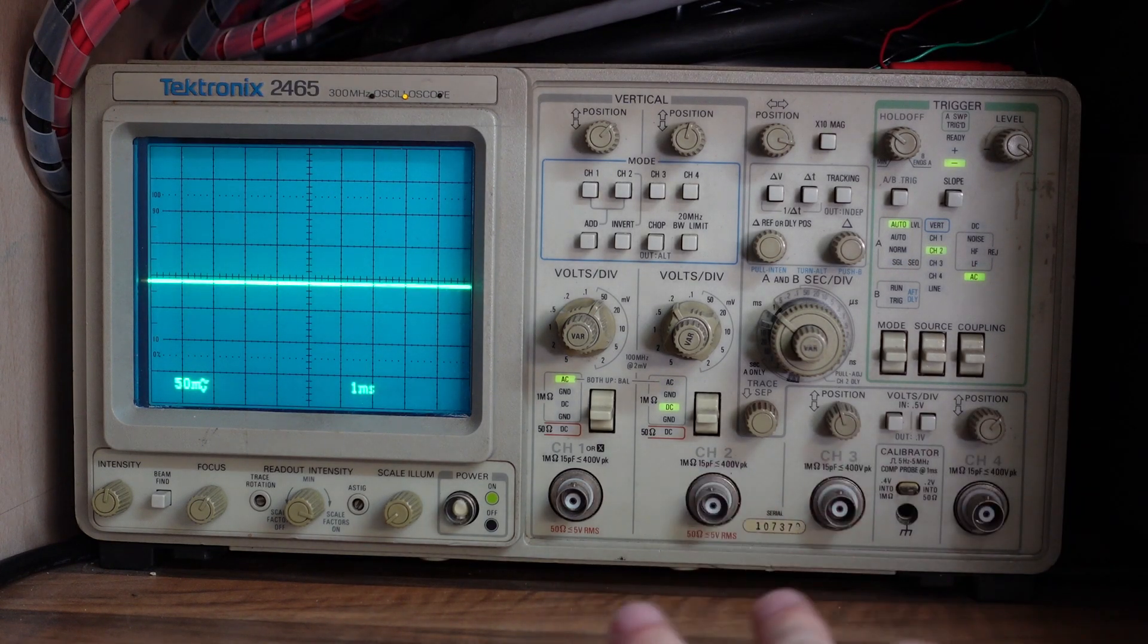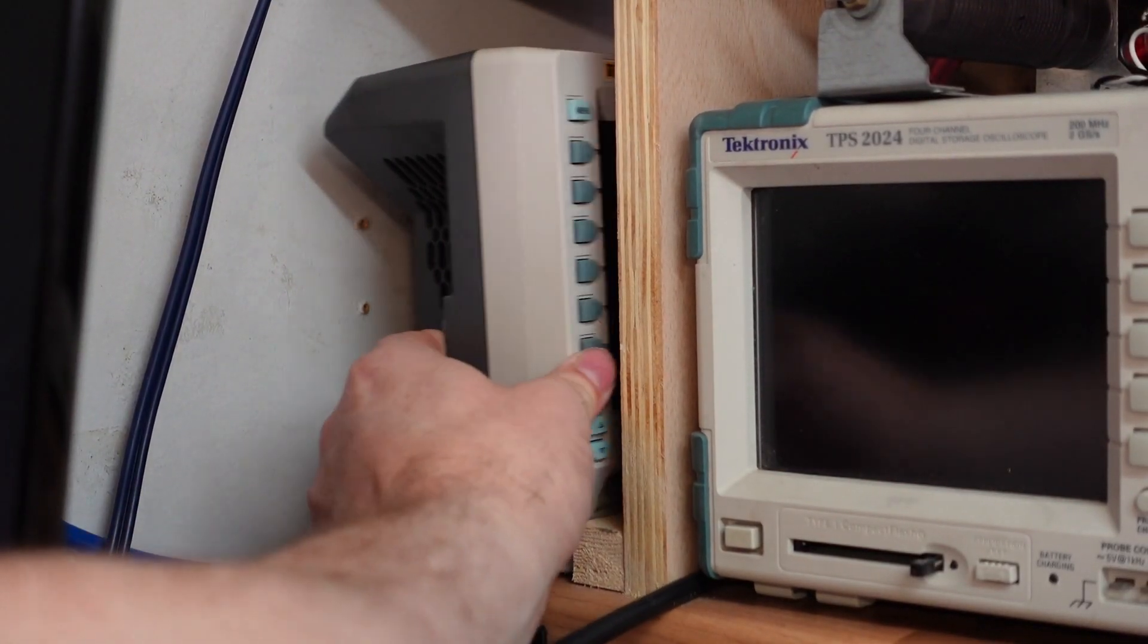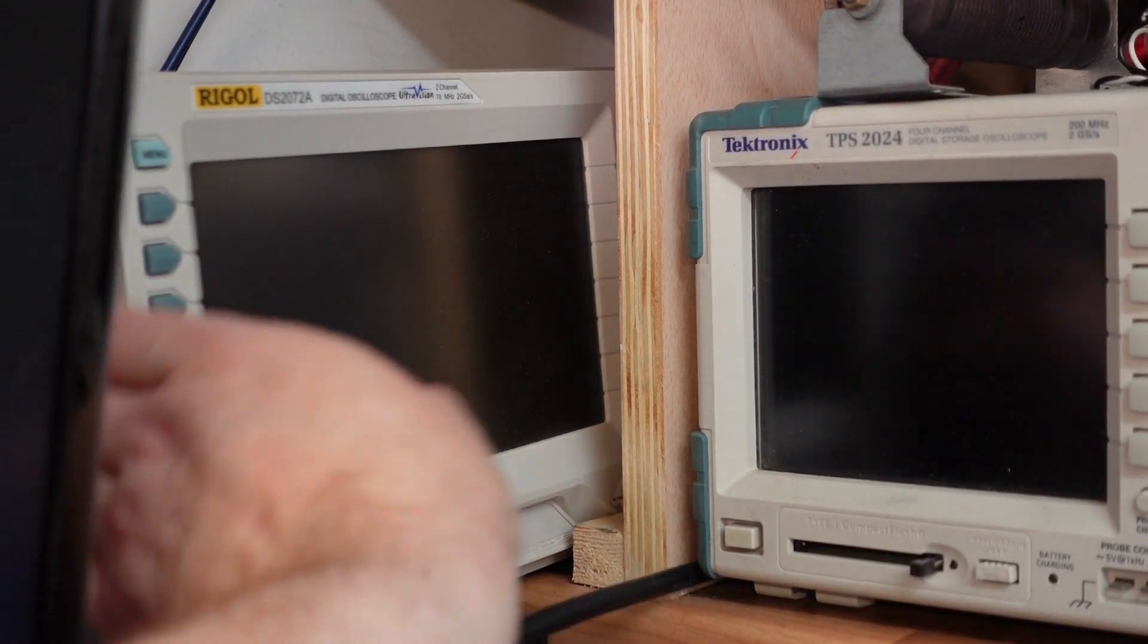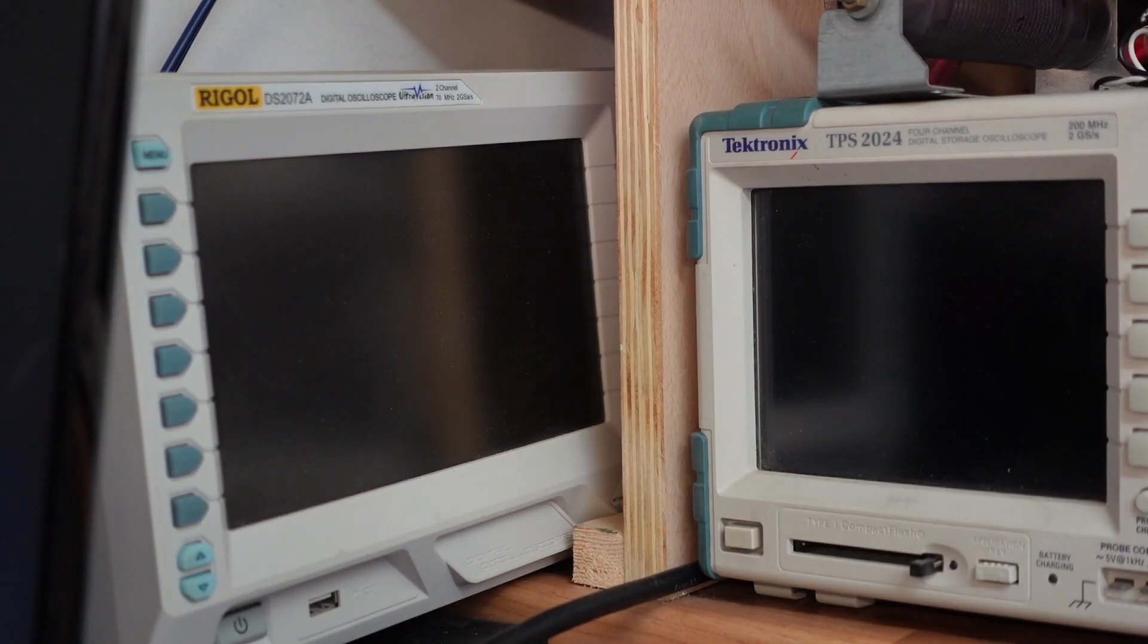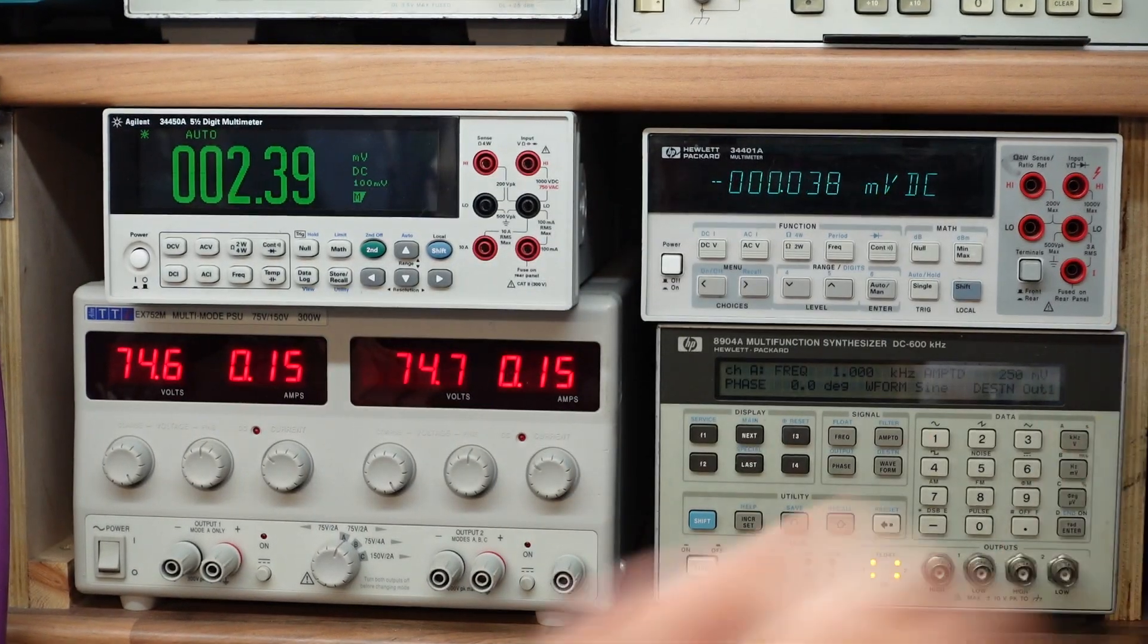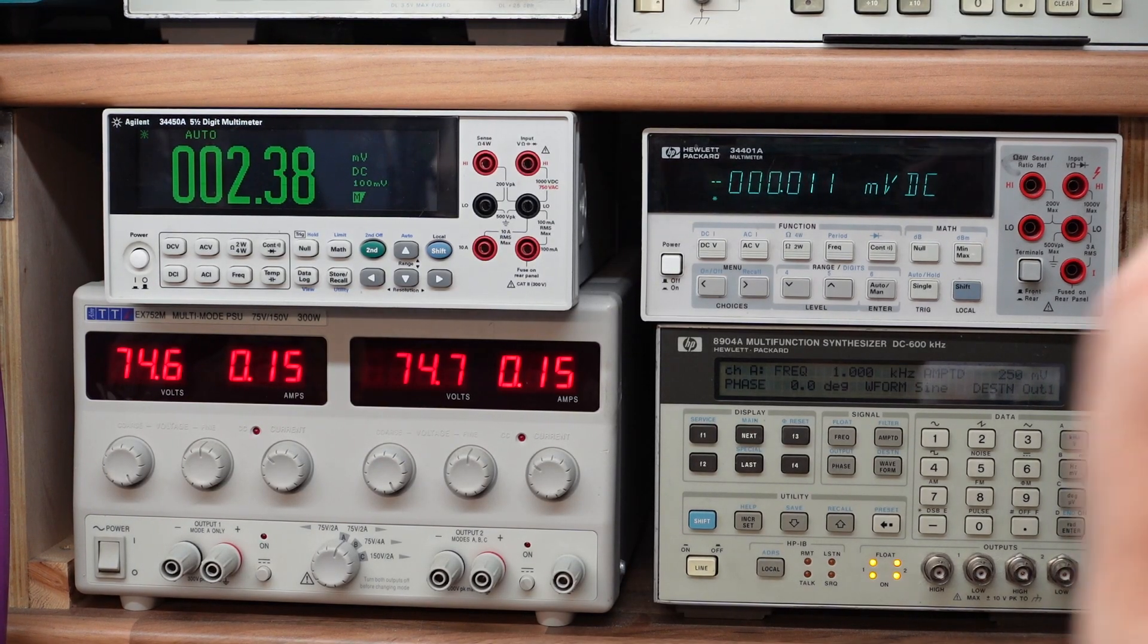This might get a bit more of an airing in the future, you never know. Oh, and I think there's an old Rigol scope in here—yes, just in case, spare one. And of course there's a couple more bench meters here. We've got an Agilent 34450A which is a five and a half digit multimeter, and next to it is the classic HP 34401A.